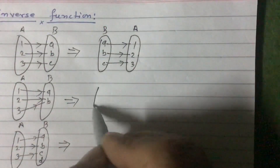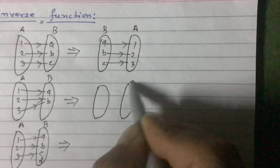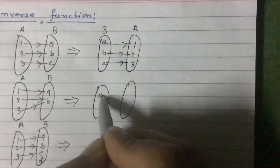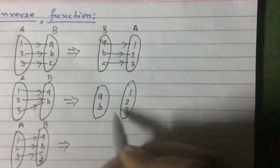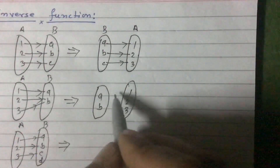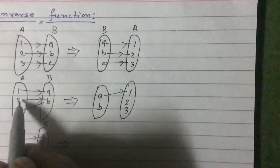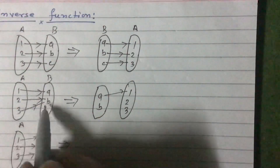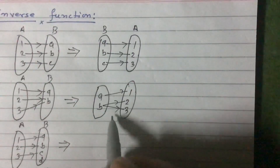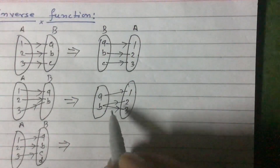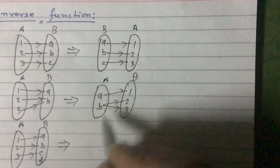Similarly, if we interchange function B, the new mapping from set B to set A gives: A maps to 1. But B maps to both 2 and 3, since both 2 and 3 originally mapped to B. This is set B and set A after interchange.